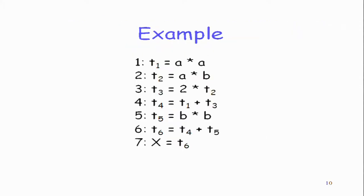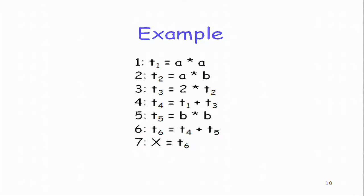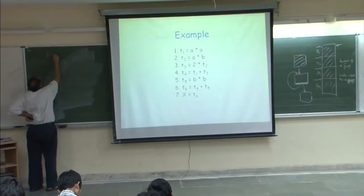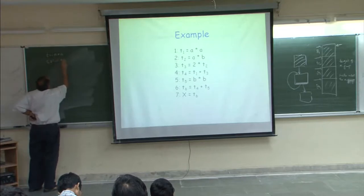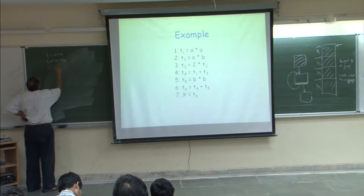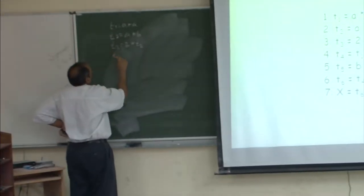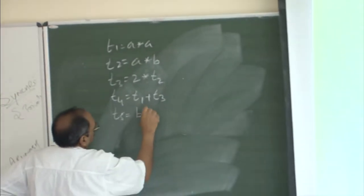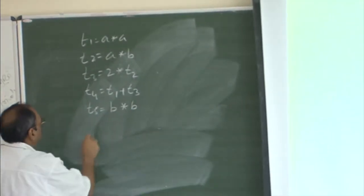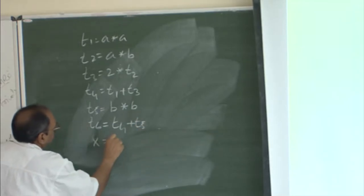Let us take an example. The code is: t1 = a*a, t2 = a*b, t3 = 2*t2, t4 = t1+t3, t5 = b*b, t6 = t4+t5, x = t6. These are instructions 1 through 7. We need to create a simple symbol table for the temporary variables t1 through t6, since a, b, x are user variables we do not optimize.